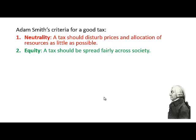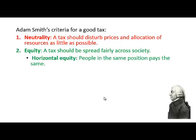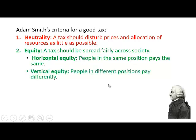The second criterion is equity. A tax should be spread fairly across society. We have two types of equity: horizontal equity, which means people in the same position pay the same amount of tax; and vertical equity, which means that people in different positions pay differently — richer people pay more tax and poorer people pay less.